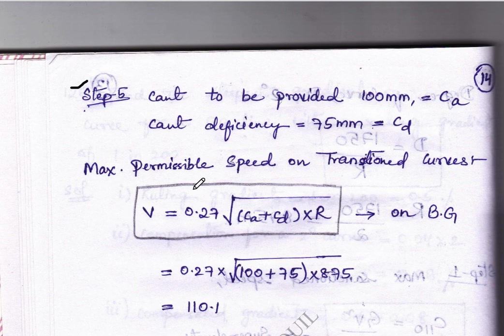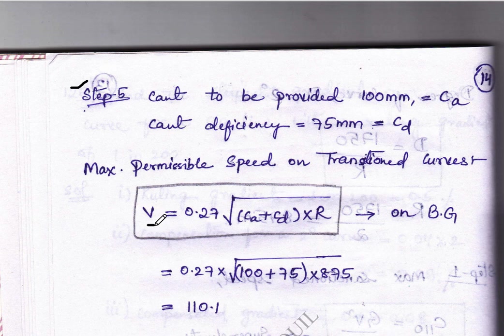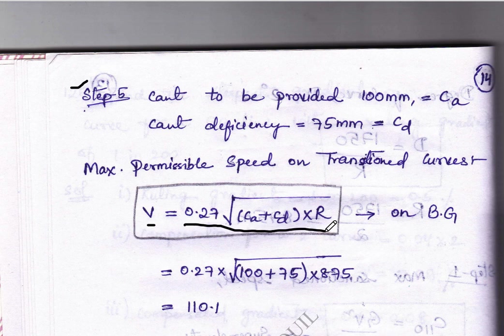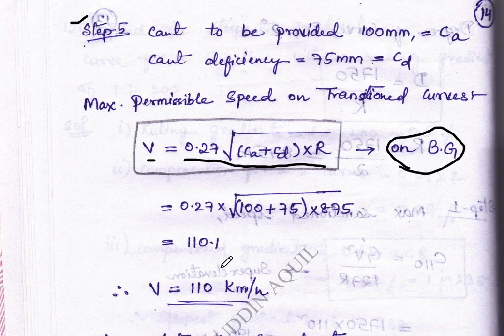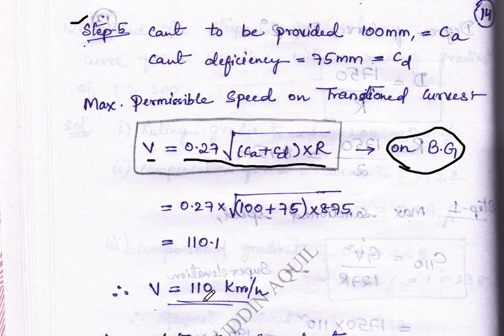Therefore maximum permissible speed on transition curves can be calculated by the formula V equal to 0.27 square root of (Ca plus Cd) into R. This is the formula for broad gauge. Substituting all the values we get V equal to 110 km per hour.